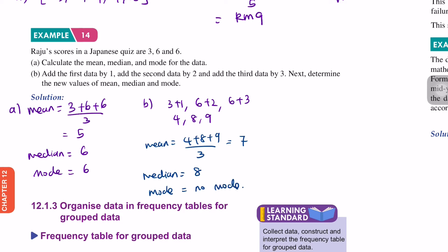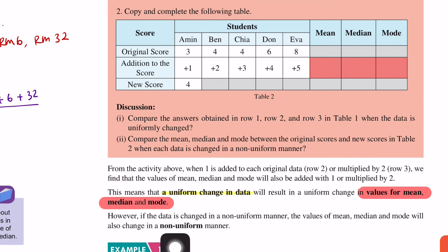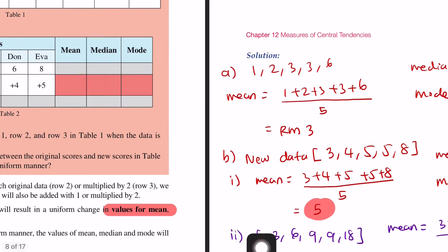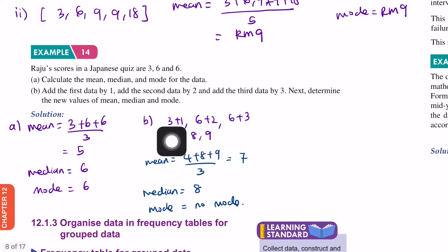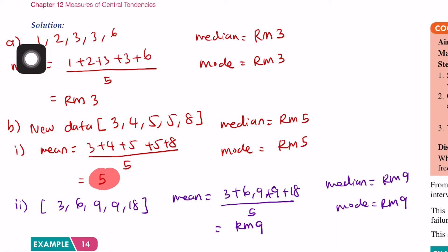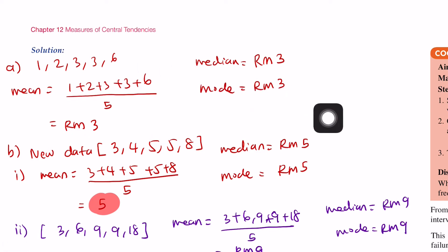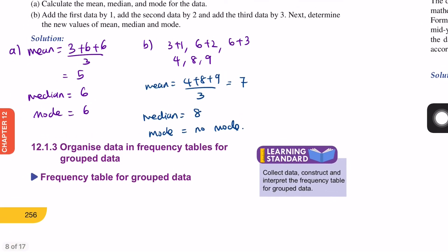From this example, if the changes are non-uniform, the results are also non-uniform. Non-uniform means not the same. For example, we add the first data by 1, the second by 2, the third by 3. In the previous Example 13, we added the same value to all data - that was uniform.